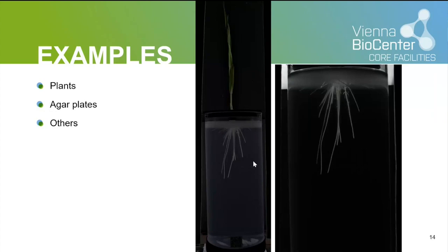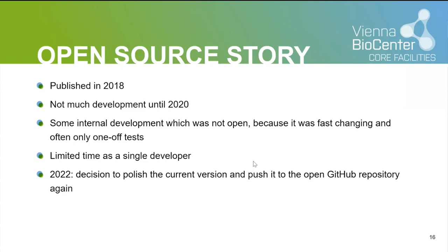We proved to ourselves that we can adapt the box to different use cases over time, which I think is its main potential. The plan was always that it's reproducible and published with all the code. It was published in 2018, then I didn't do much development until 2020 because I changed companies, but the box moved with me and is still in use. As the single developer, I have limited time, which is why the Git repository still has an older version — workable, but not the newest. We plan on publishing the changes and improvements we've made in the near future.